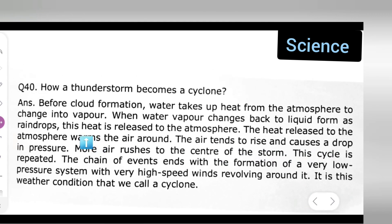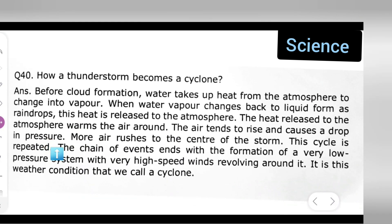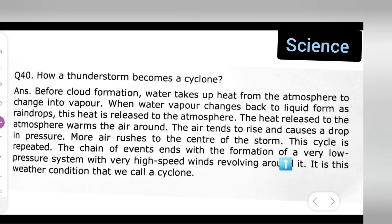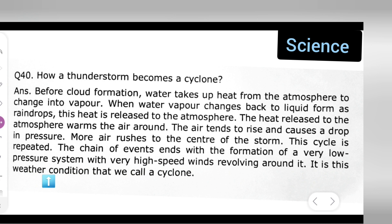The heat released to the atmosphere warms the air around it. The air tends to rise and causes a drop in pressure. More air rushes to the center of the storm, and this cycle is repeated. The chain of events ends with the formation of a very low pressure system with very high speed winds revolving around it — this weather condition is what we call a cyclone.